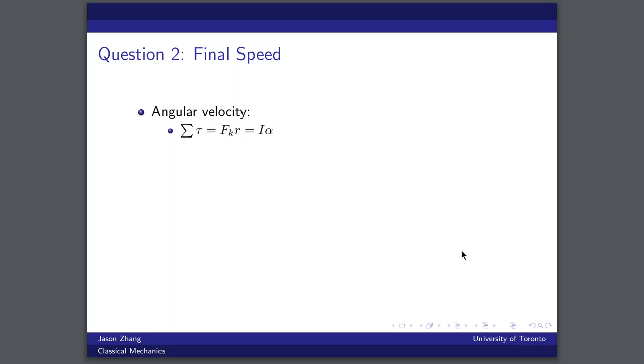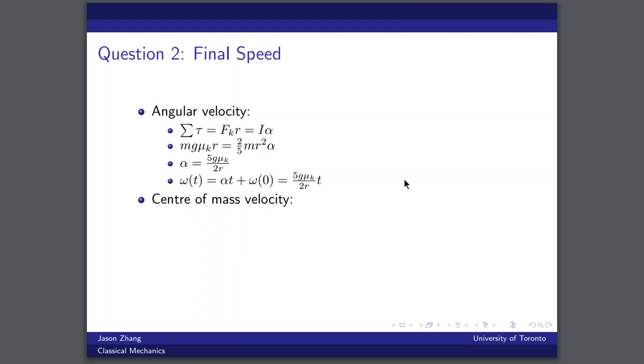So we can express this by looking at the net torque, which is equal to Fk times R. And we know that this is equal to I times the angular acceleration. So given that we know the force of friction is just the weight times the coefficient of kinetic friction, and we also know our value for I, we can substitute those in and we can solve for our angular acceleration. Then we can integrate this to find a time dependent expression for our angular velocity. And given that our initial angular velocity is zero, we just see this expression is alpha times T.